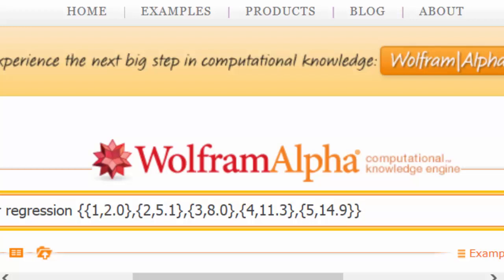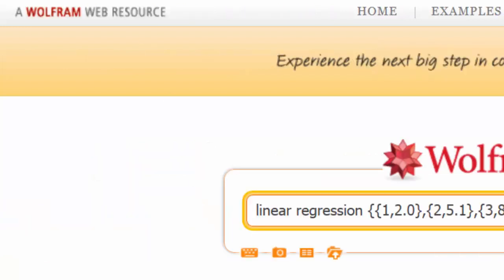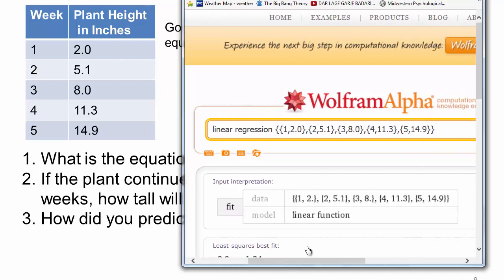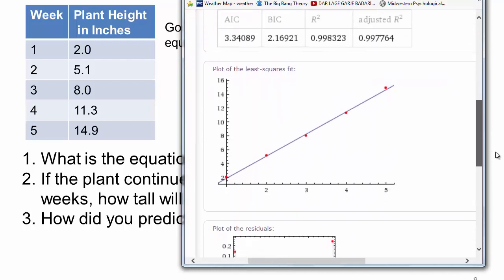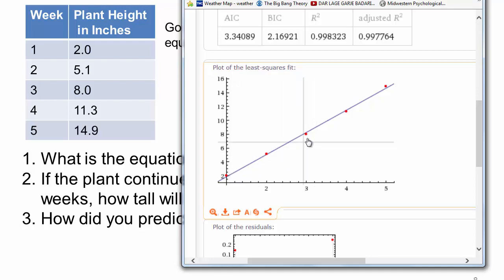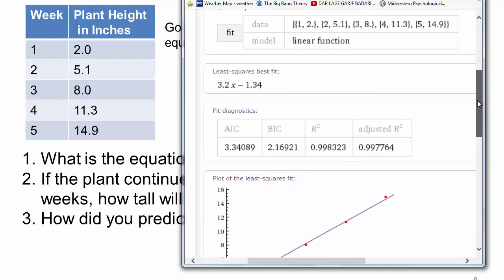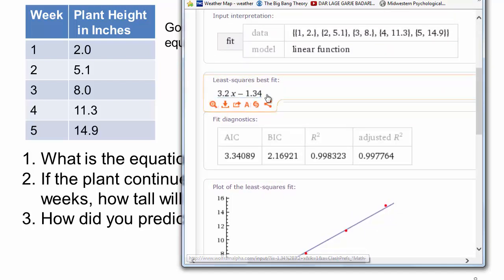So now if you press enter, you will see the graph that shows up here. So there were your data points. You can always go to the coordinates and it will tell you 1 and 2, 2 and 5.1, 3 and 8, 4 and 11.3, and 5 and 14.9. And this is the line that best fits it. And it will give you an equation of that line, which is the 3.2x minus 1.34.